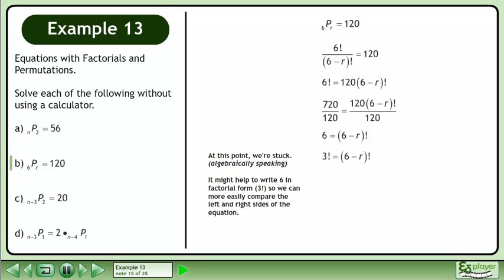At this point we're stuck, algebraically speaking. It might help to write 6 in factorial form, 3 factorial, so we can more easily compare the left and right sides of the equation.